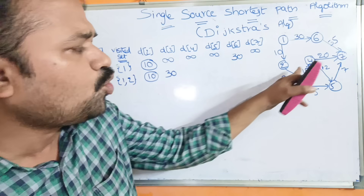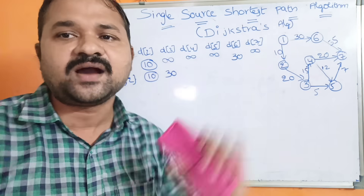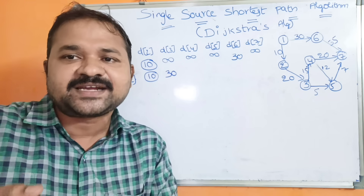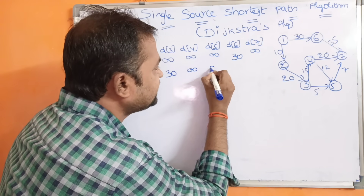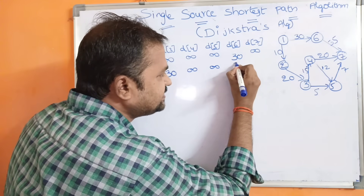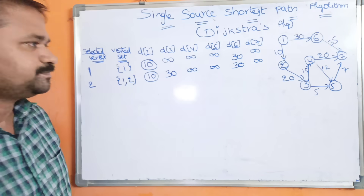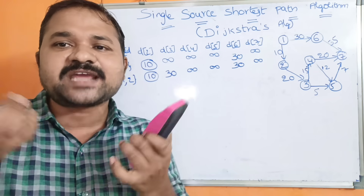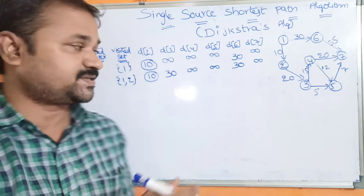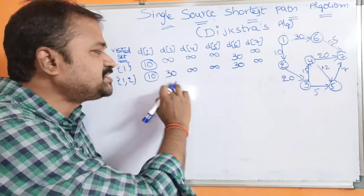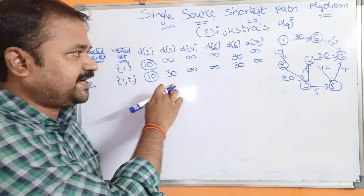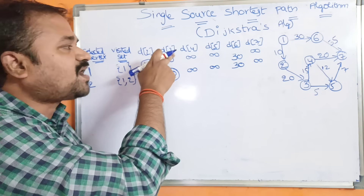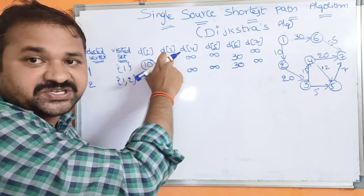There are no other edges from 2 to remaining vertices, so we assume infinity for those, while keeping cost of 6 as 30. Now we have to select the next vertex by finding the minimum distance. We have costs 30, infinity, and 30. These two 30s are equal, but vertex 3 occurred first, so we assume vertex 3 as the next vertex. The cost of 3 is 30, so the next selected vertex is 3.